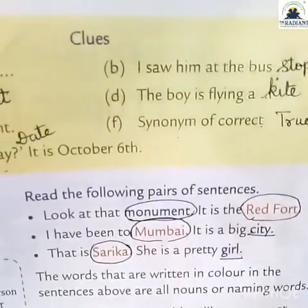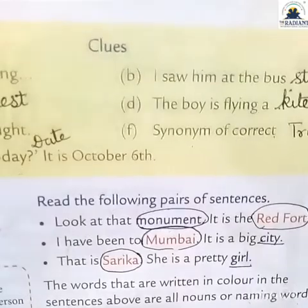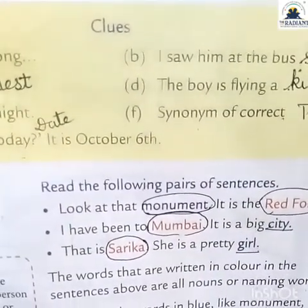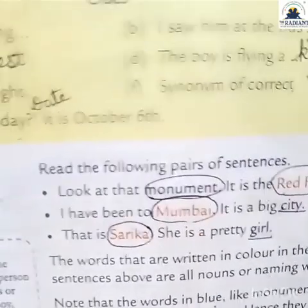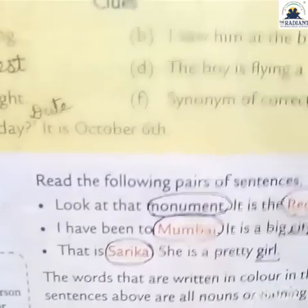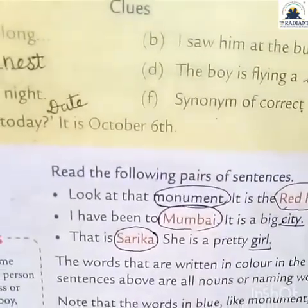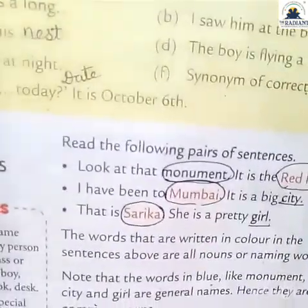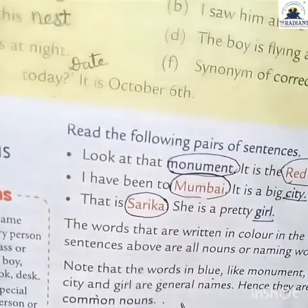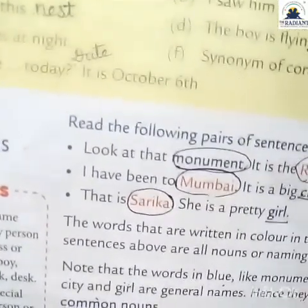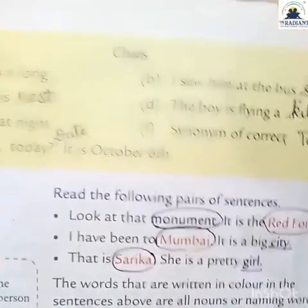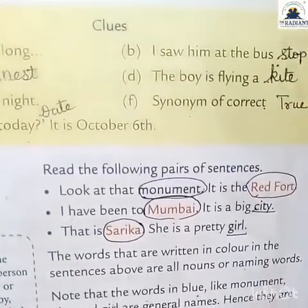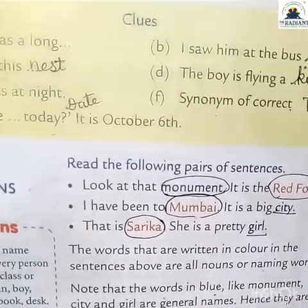Note that the words in blue — like monument — ye jo hai common nouns hain. Jo general hota hai, jaise sabhi girls ko hum 'girl' hi bolte hain, city ko hum 'city' bolte hain — isliye they are common nouns. On the other hand, the words in red — Red Fort, Mumbai, and Sarika — are specific names of the monument, city, and girl respectively, hence they are proper nouns. Jo bhi cheez general mein ek hi naam se bulate hain usse common noun, aur specific names ko proper noun kehte hain. Students, you have already done this in second and third standard.